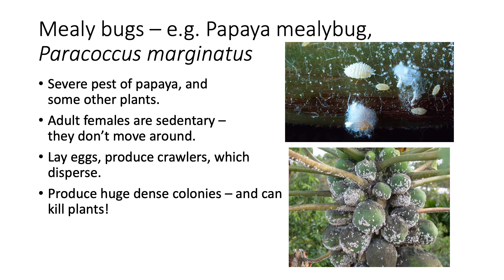Moving on to mealybugs — I'm going to talk about papaya mealybug as an example. This is a species that attacks papaya significantly, as well as a number of other crops and many ornamentals. It can be a severe problem and can cause plants to die. It looks like you've sprayed them with a highly effective herbicide if you get a really huge infestation. The adults are largely sedentary — they don't really move around extensively. They can walk around a bit, but they don't fly and don't move from plant to plant.